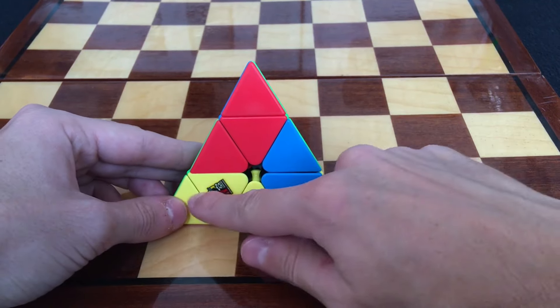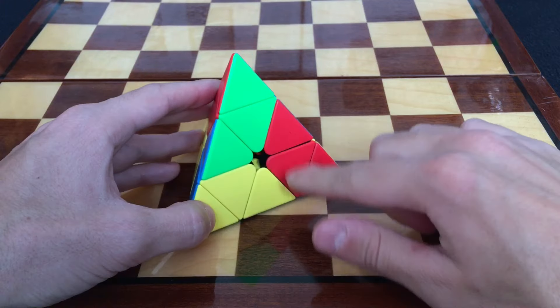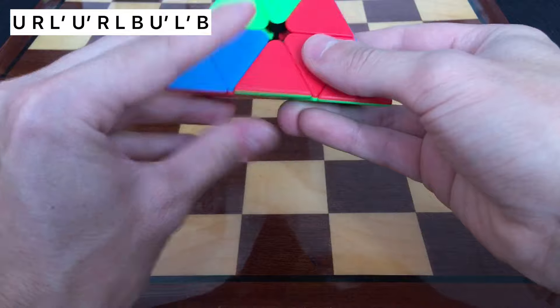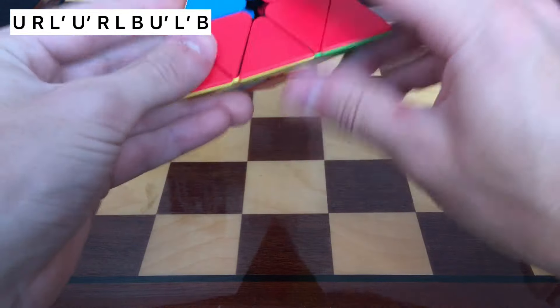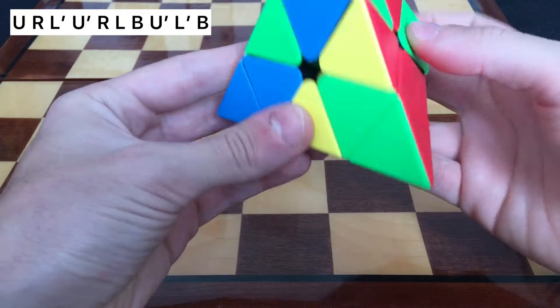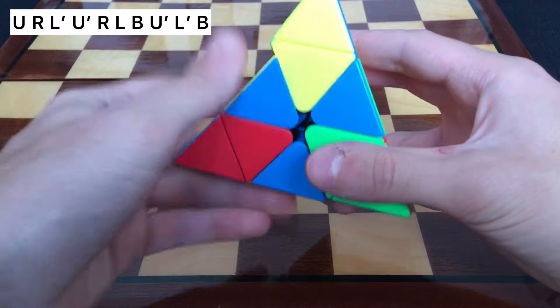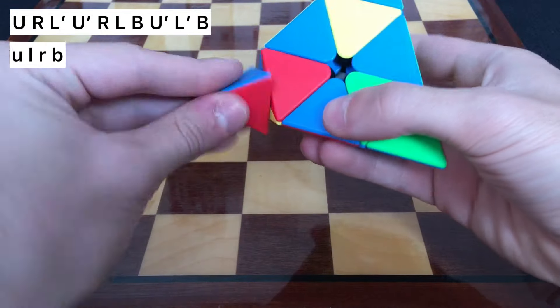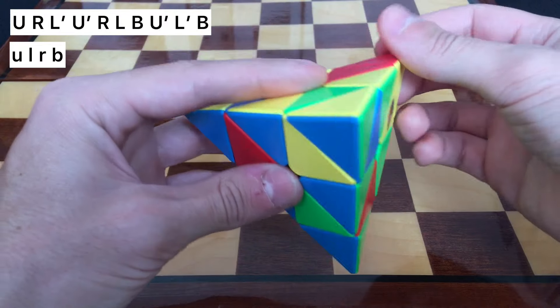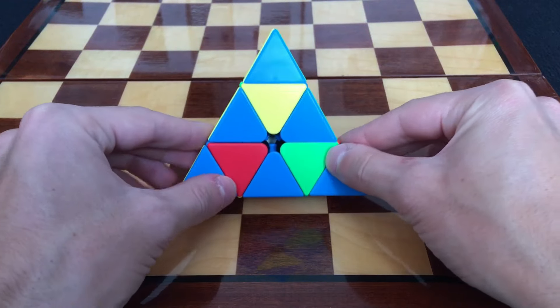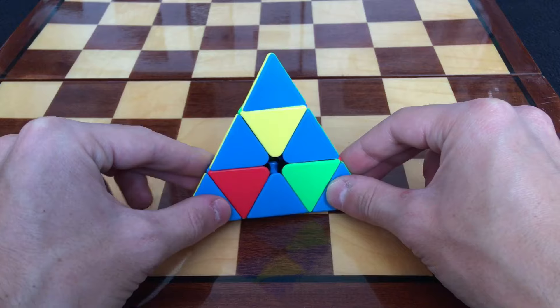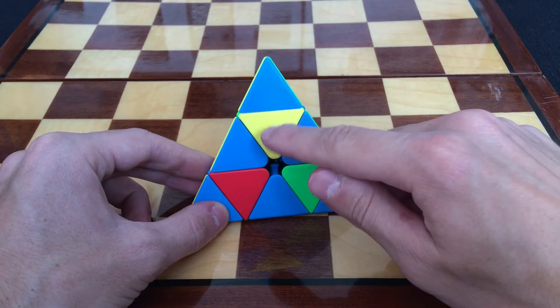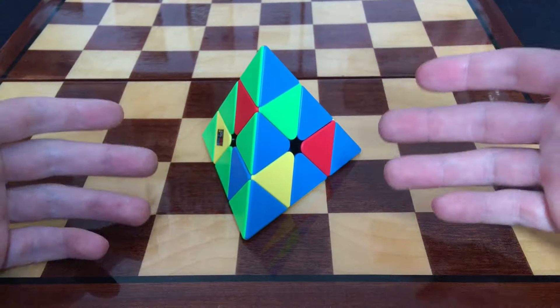This one I call the checker flip, and you'll see why. U R L' U' R L Back U' L' Back, now the tips U L R Back. So this is the checker flip because I do the checkerboard pattern but with the flipped centers.